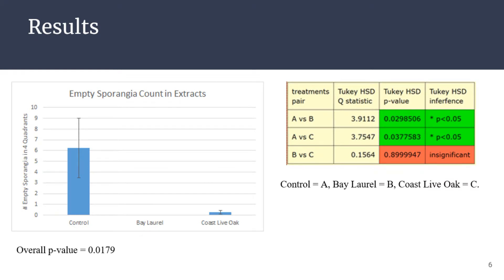The results show that when we cultured these tannins in solutions — with a control of just DI water at neutral pH — we found a lot fewer empty sporangia in our bay laurel and coast live oak extracts. This means these tannin solutions are very potent at eliminating empty sporangia, and this is also proven statistically with a Tukey post-test after a single-factor ANOVA, based on very low p-values.